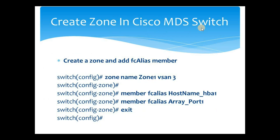Next, we create a zone in Cisco MDS switch. While in config mode, the command is 'zone name zone1 vsan 3'. This is the name of the zone — you can give it any name based on your naming convention. This command creates a zone named zone1 and takes us into zone config mode, shown by 'config-zone' in the prompt. We then add the FC alias members using 'member fcalias hostname_hba1' and 'member fcalias array_port1'. These commands create a zone in VSAN 3 with those two FC alias members. Type 'exit' to leave zone config mode.